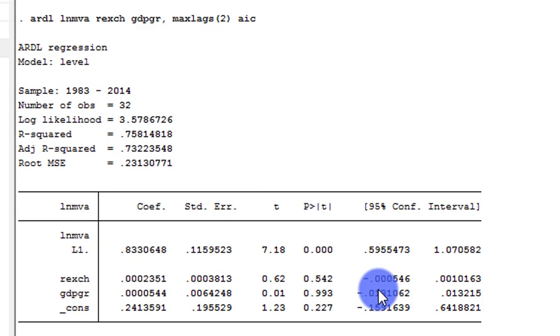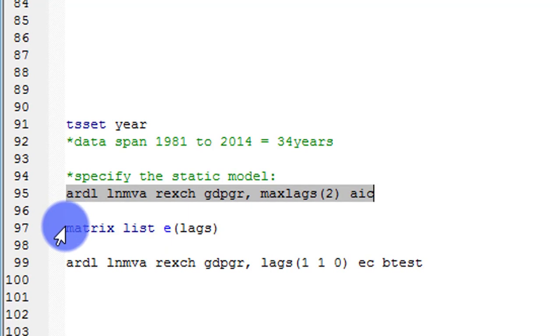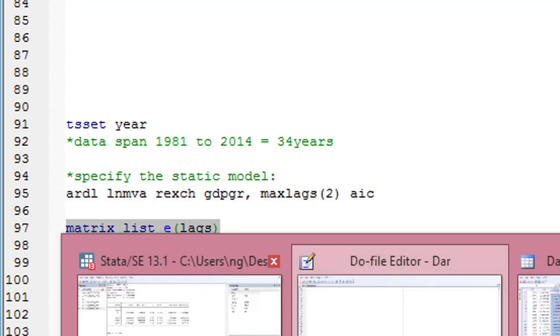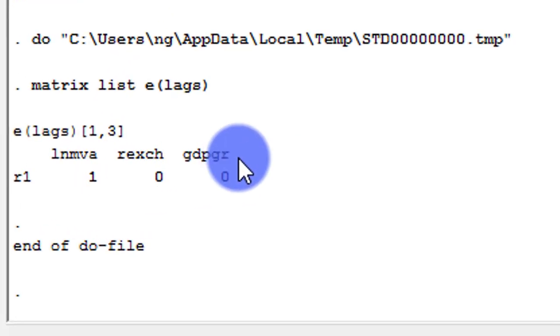After that, I also issue this command. And the optimal lags from AIC is shown. So the optimal lag for the three variables are 1, 0, 0. 1 for the log of MVA, 0 for real exchange rate, and 0 for GDP growth rate.